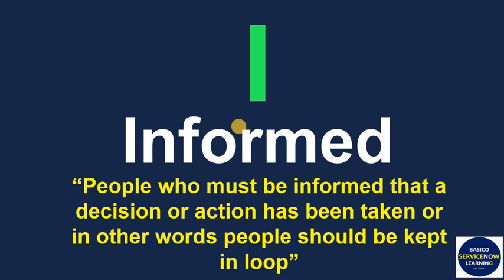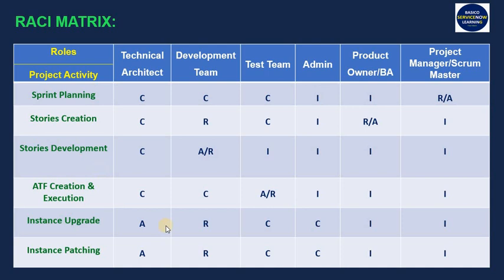Now let's see how the RACI matrix looks and how we assign RACI in it. Here is a RACI matrix I have prepared as an example. We have some roles: technical architect, development team, test team, admin, product owner or BA, project manager, and scrum master. We have some project activities or tasks, and we assign responsibilities accordingly.